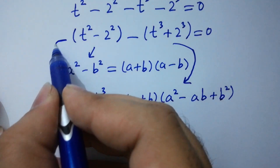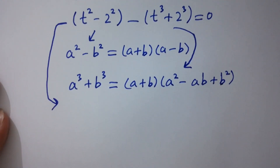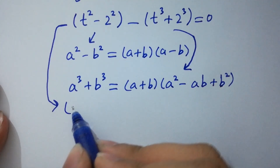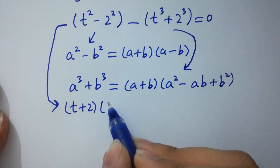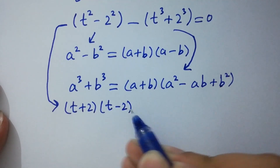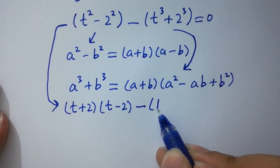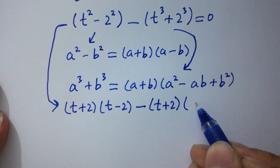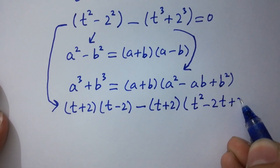So if we apply both formulas, we get t plus 2, t minus 2, and here we have t plus 2, t squared minus 2t plus 4.